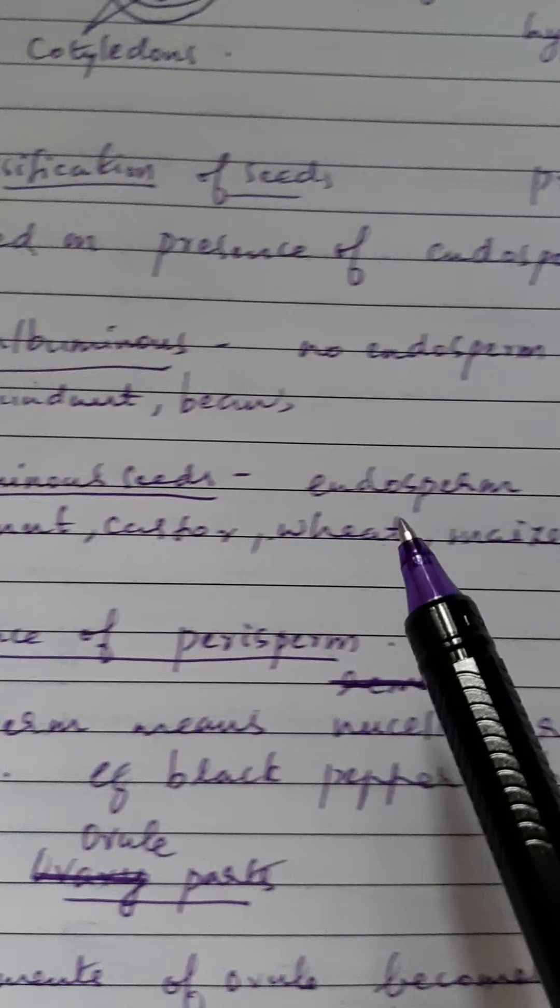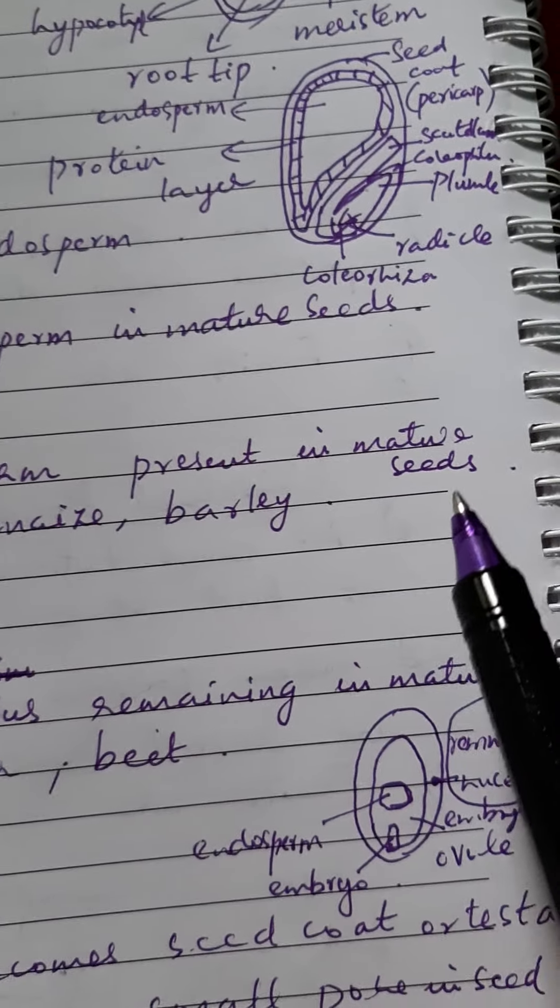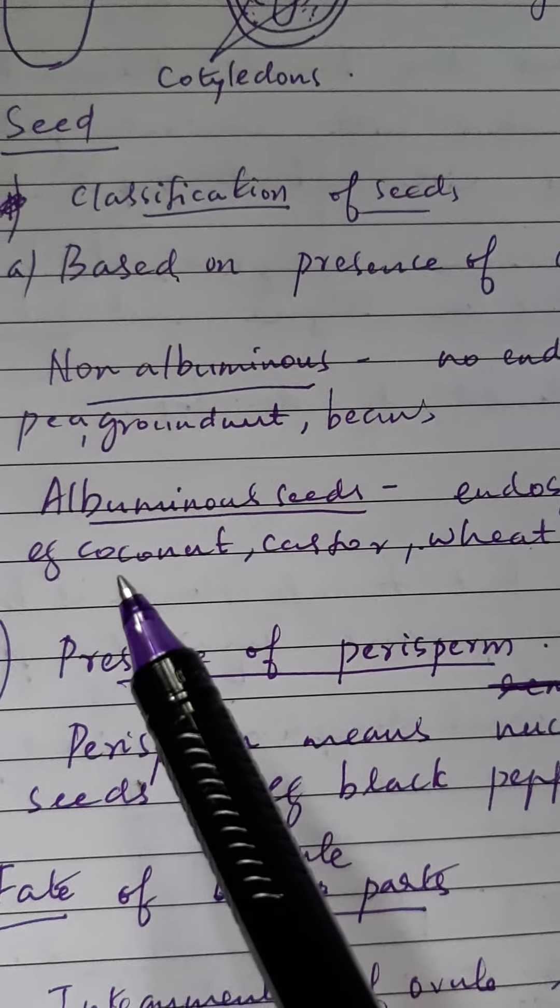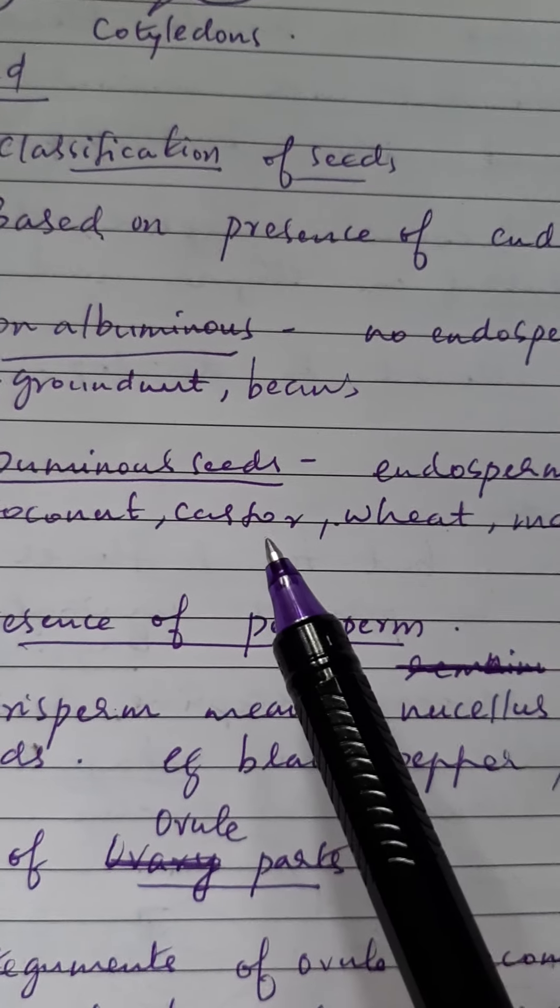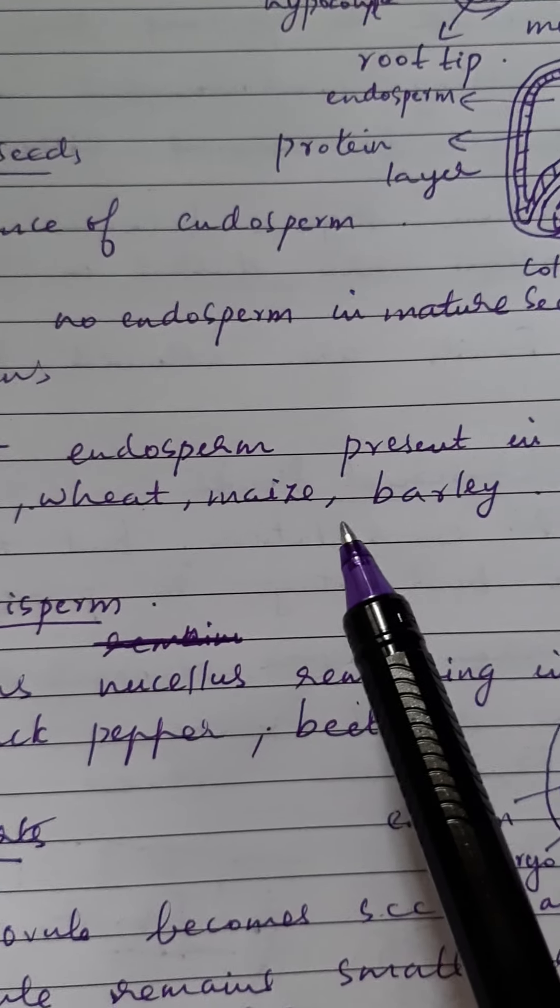Albuminous seeds means endosperm is present in mature seeds. For example coconut, castor, wheat, maize, barley.